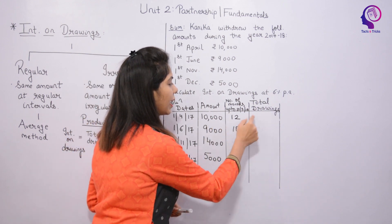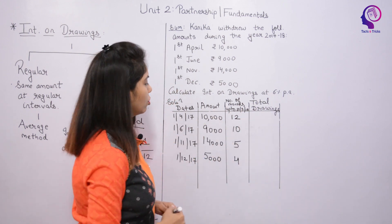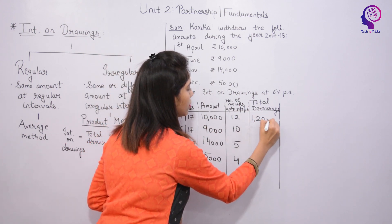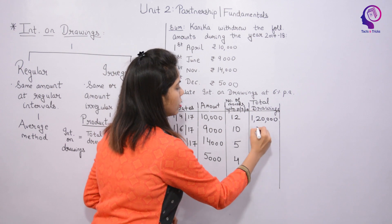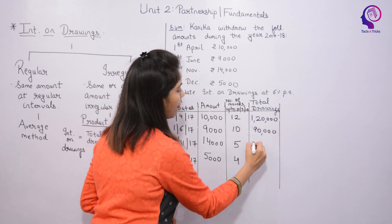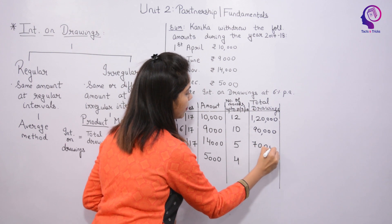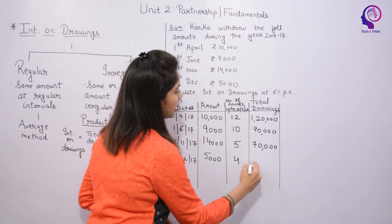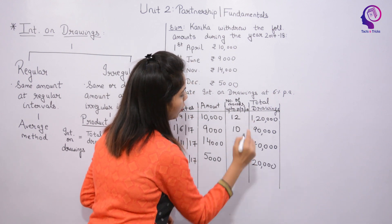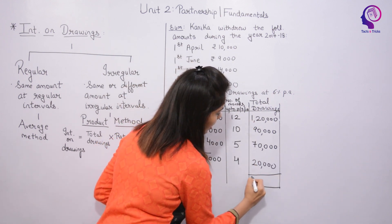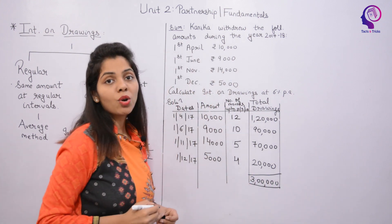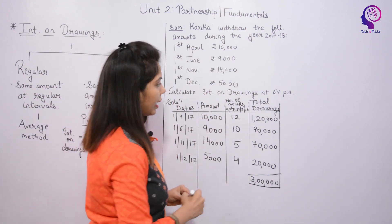Now we multiply amount by months to get the product for each row. 10,000 × 12 = 1,20,000. 9,000 × 10 = 90,000. 14,000 × 5 = 70,000. 5,000 × 4 = 20,000. Totalling these, our Total Product of Drawings = 3,00,000.